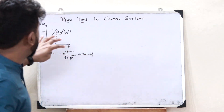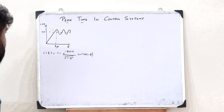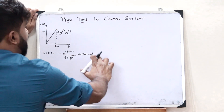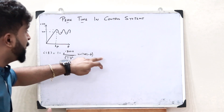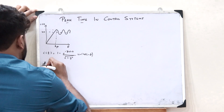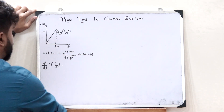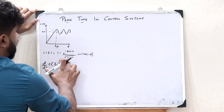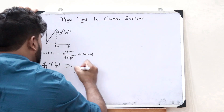In order to find the slope of this particular curve, all we have to do is differentiate this expression with respect to t. When the slope is at the maximum point, the rate of change is equal to 0. That is, we take the differentiation of this term and equate it to 0. Now, let us take d/dt of C(t_p), that is the peak time. The differential of 1 is equal to 0, and 1 by root of 1 minus zeta squared is a constant.